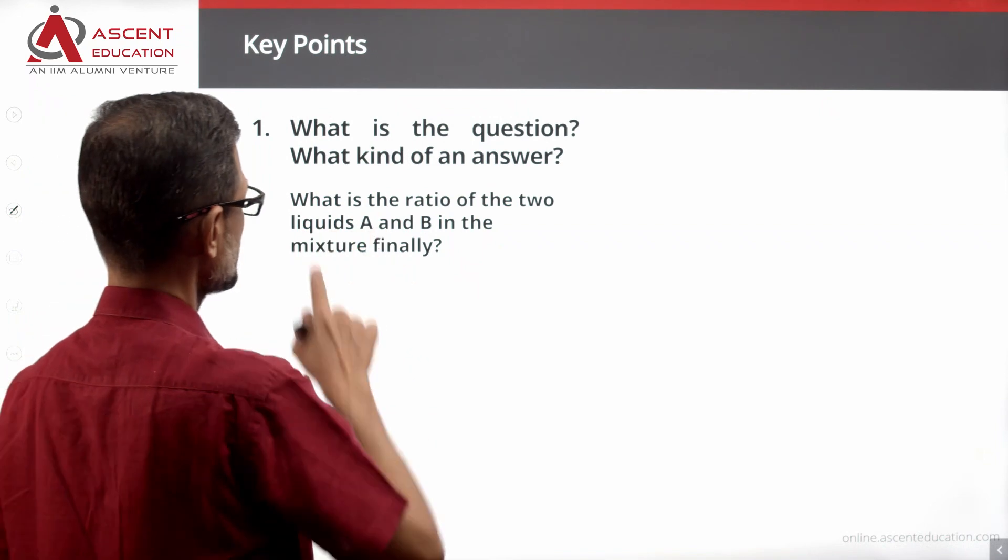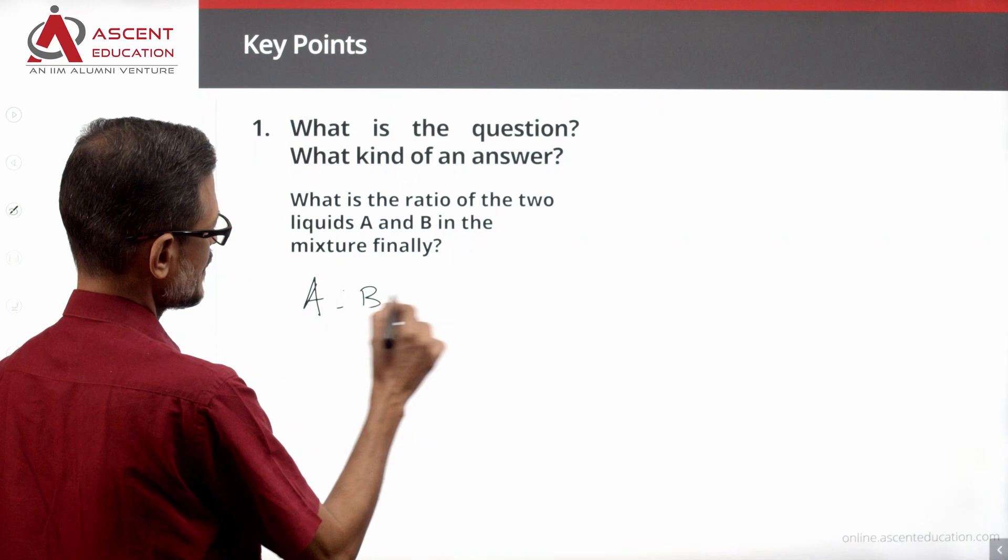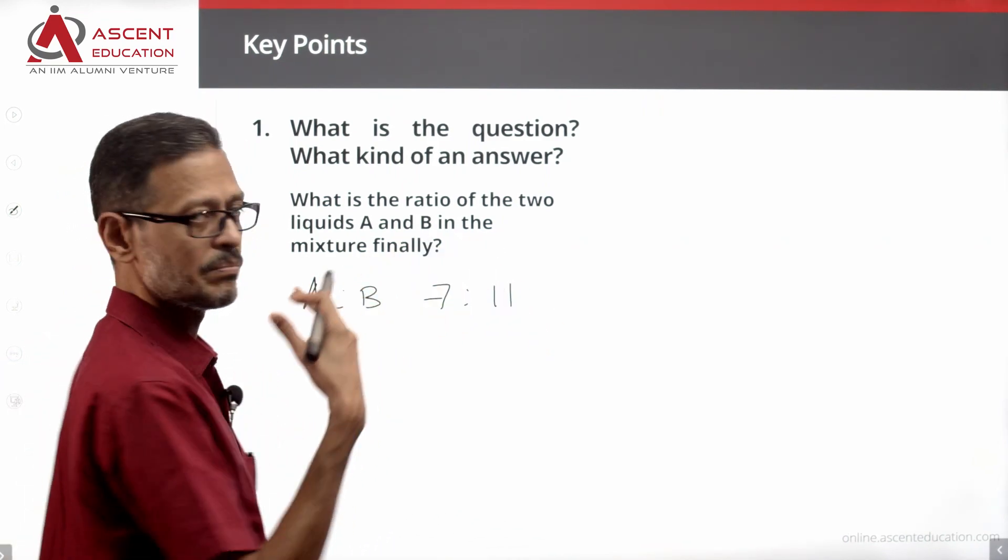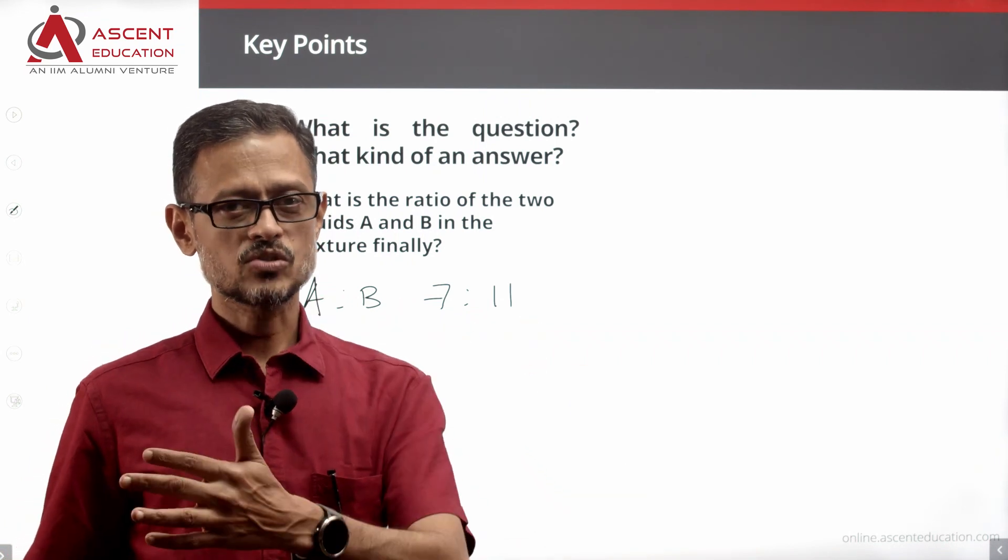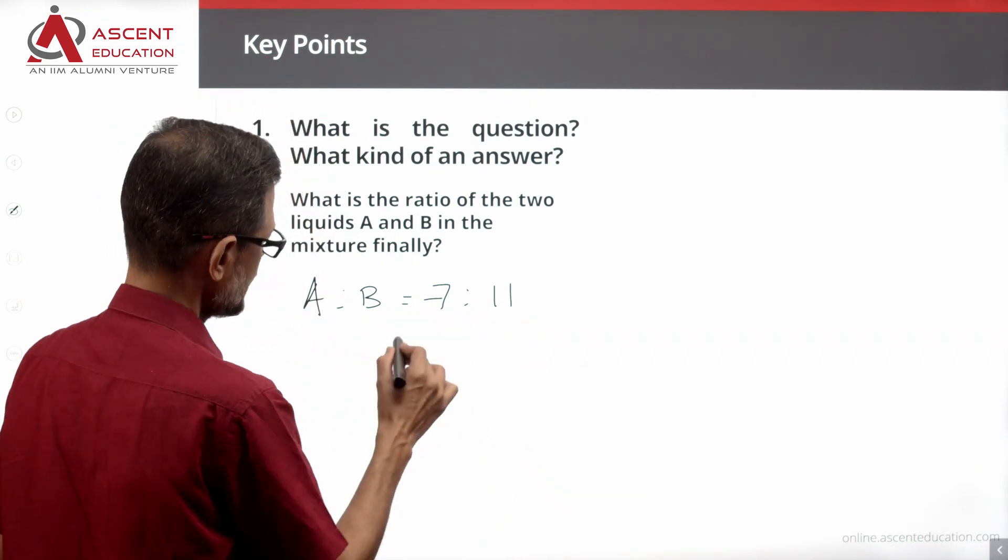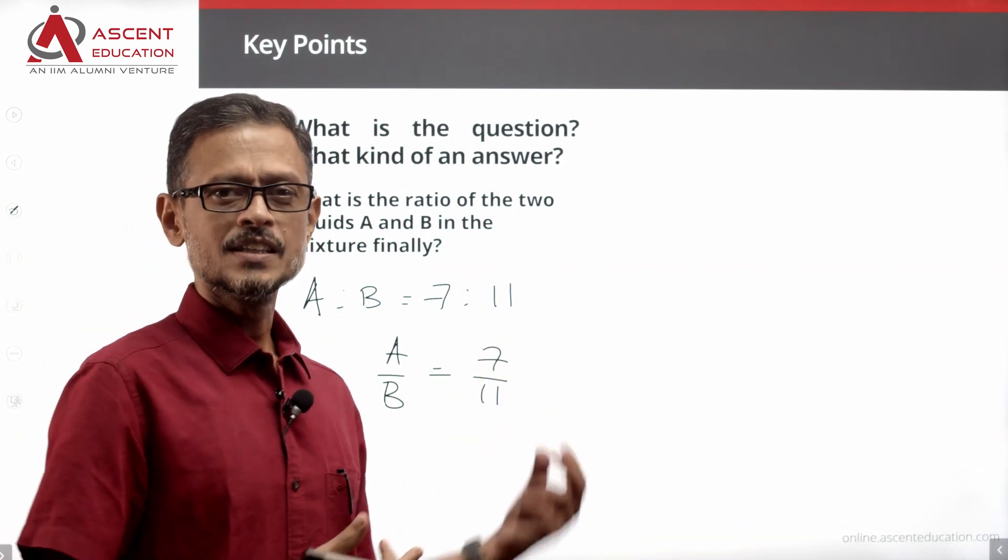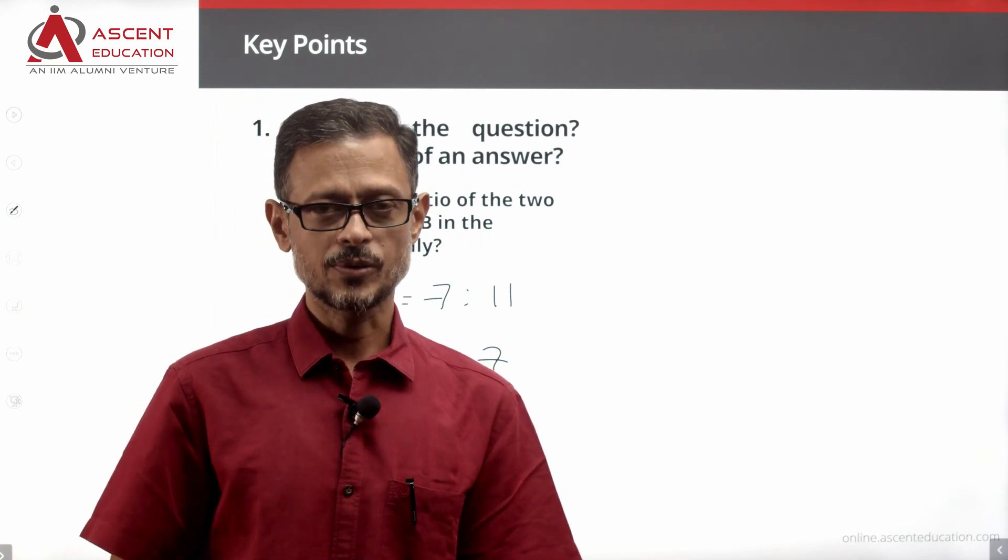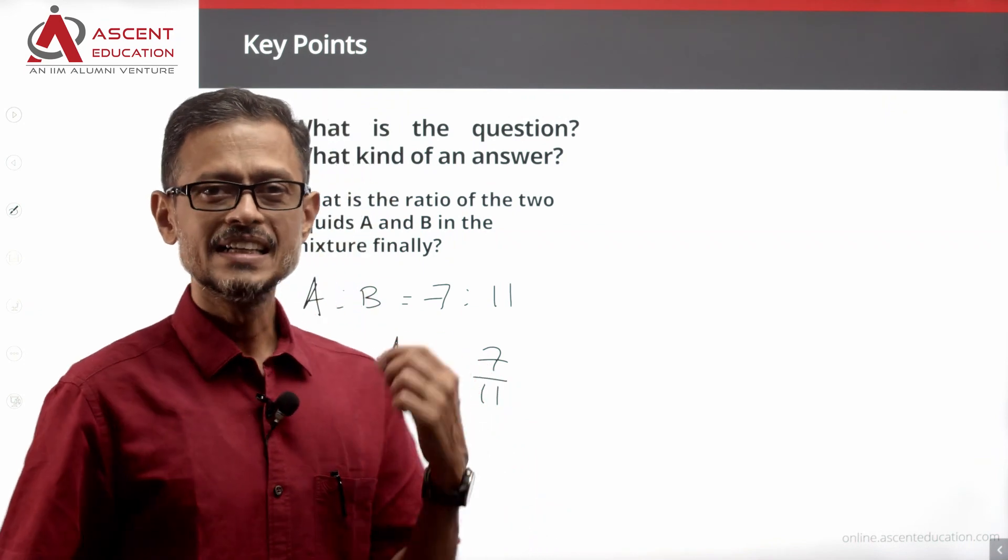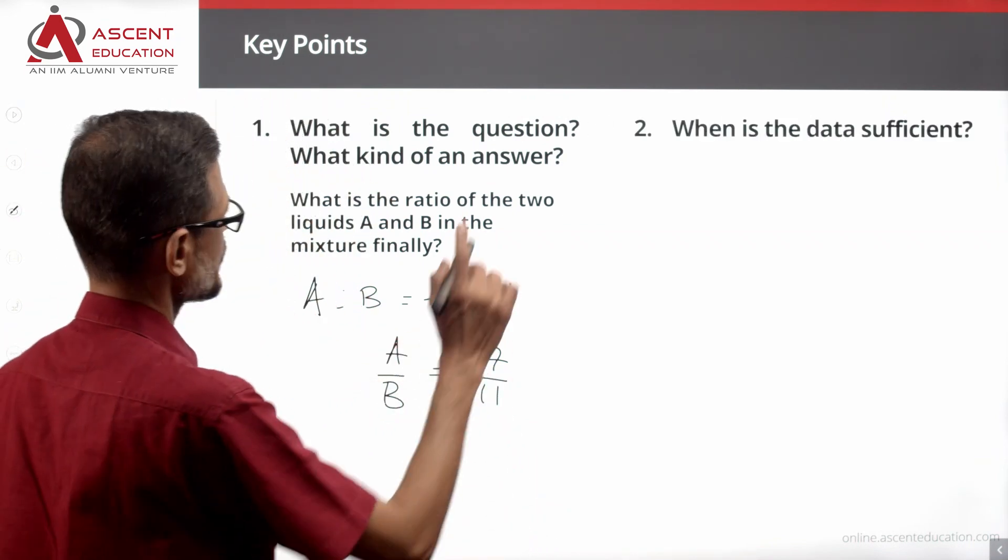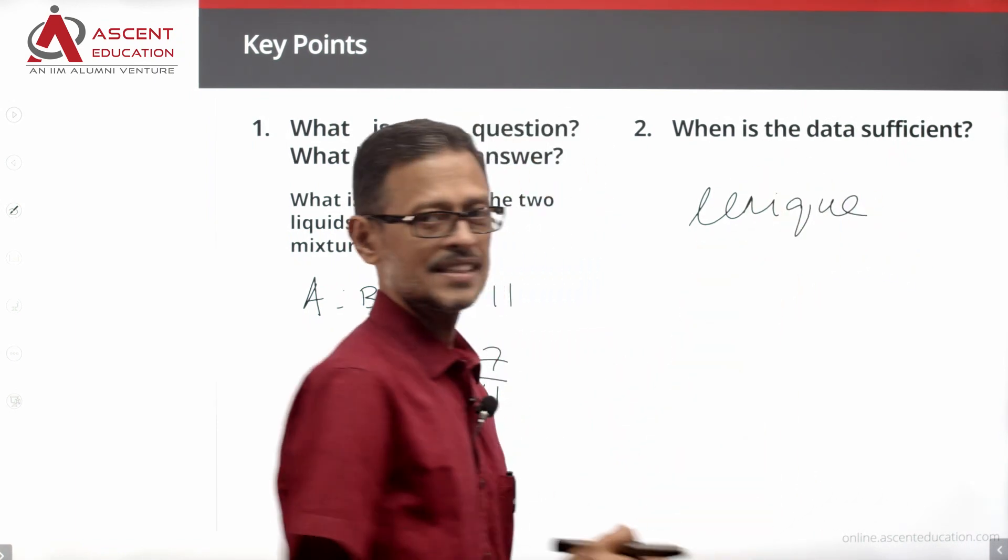What is the question? What is the ratio of the two liquids A and B in a mixture finally? So A is to B ratio, which could be 7 is to 11. The ratio can be written in the form we typically write ratio, A is to B, 7 is to 11. It could be A divided by B is equal to 7 divided by 11. Both are one and the same. Two different ways of writing the ratio. So finally, a number answer which is either a ratio or a fraction. A unique value like 7 divided by 11 means the data is sufficient.